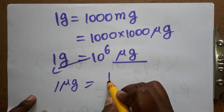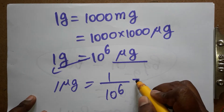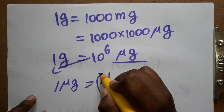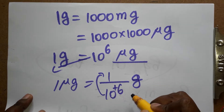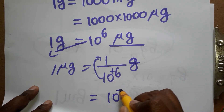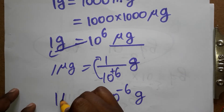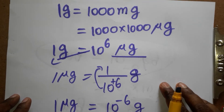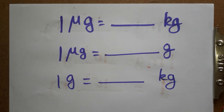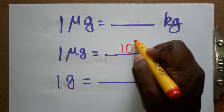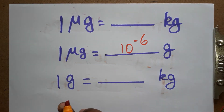From this, if we bring 10⁶ to the denominator, we get: one microgram equals one divided by 10⁶ grams. Moving it from denominator to numerator, the exponent changes sign — so one microgram is equal to 10⁻⁶ grams.